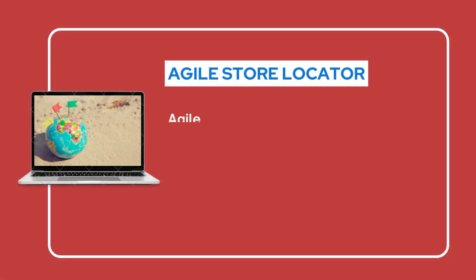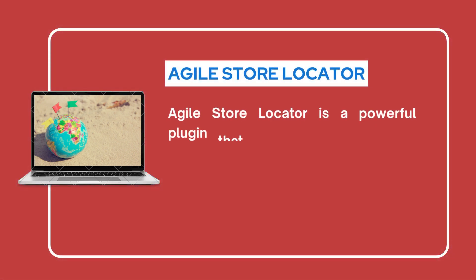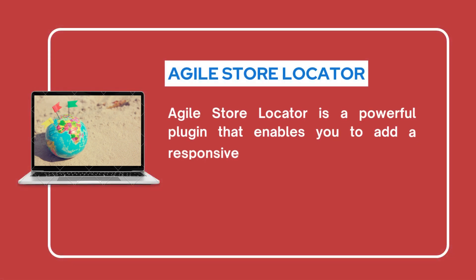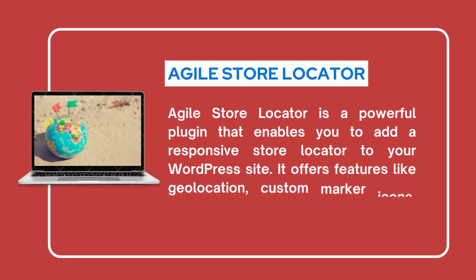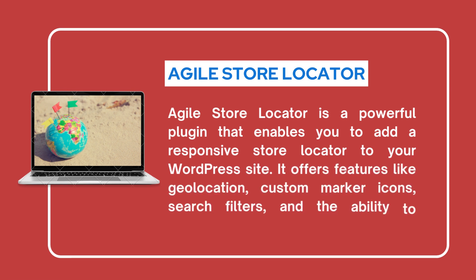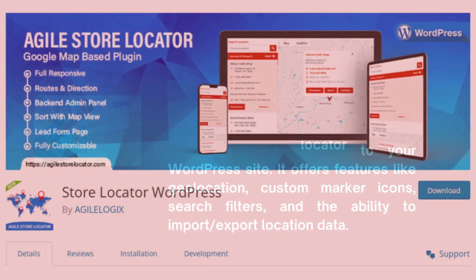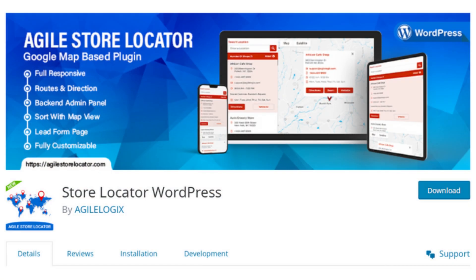Our other popular plugin is Eagle Store Locator. This plugin enables a responsive store locator on your WordPress site. It offers features like Geolocation, custom marker icons, search filters, and the ability to import and export location data.